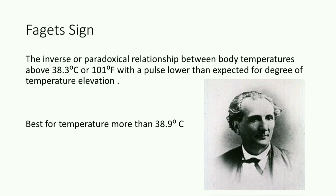What is Faget's sign? It is the inverse or paradoxical relationship between body temperatures above 38.3 degrees Celsius or 101 degrees Fahrenheit with a pulse lower than that expected for the degree of temperature elevation. It is quite simply put the exception to Lebermeister rule. This sign can be best described for temperatures more than 38.9 degrees Celsius, meaning that for temperatures from 38.3 to 38.9 degrees Celsius, this sign is not of much significance. The individual shown here is Jean Faget, the individual behind this named sign.